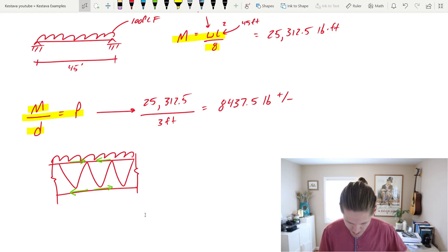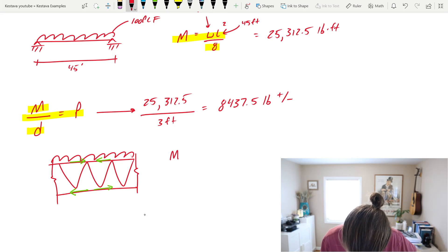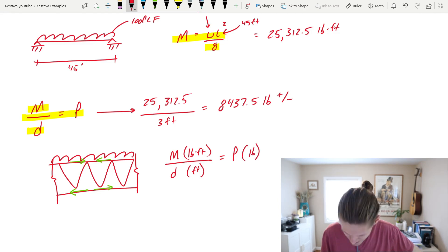A great way to remember this equation in particular is actually just to look at its units. M has pound-feet in our problem here, divided by D which is just the depth of your truss which is in feet, and when you divide those that leaves you with P which from units just breaks down into a pound force. And an axial force is just that, it's just a load, it's in pounds, it's in kips, it's in kilonewtons.